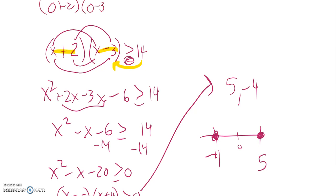0 plus 2 times 0 minus 3. Is that greater than or equal to 14? It's not. 2 times negative 3 is negative 6. That's not greater than 14. So 0 doesn't work.